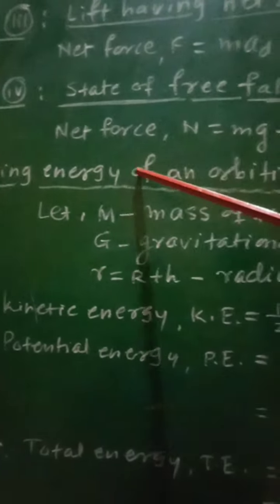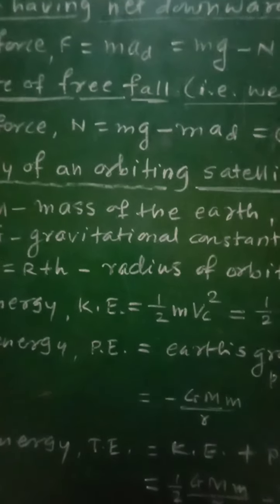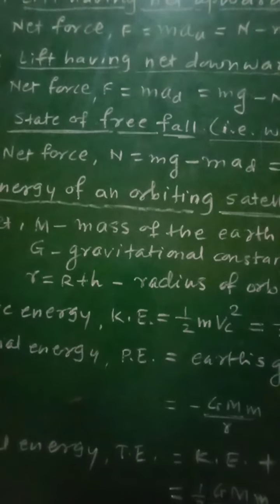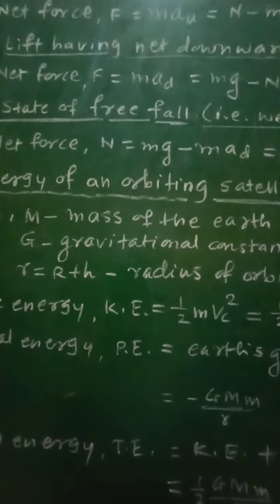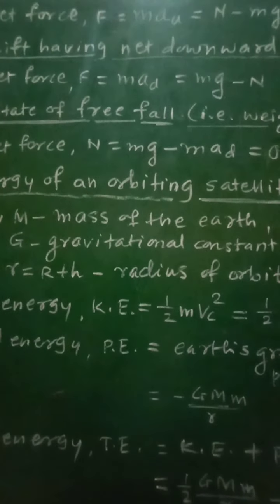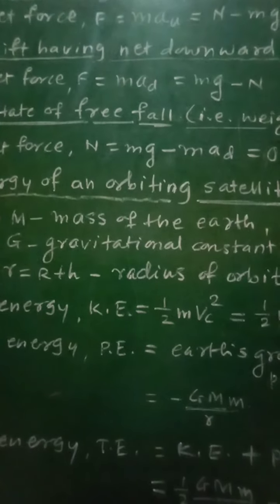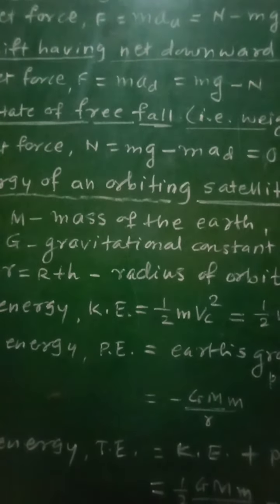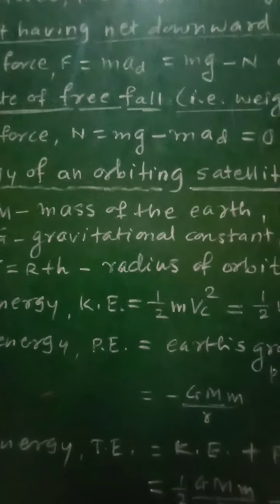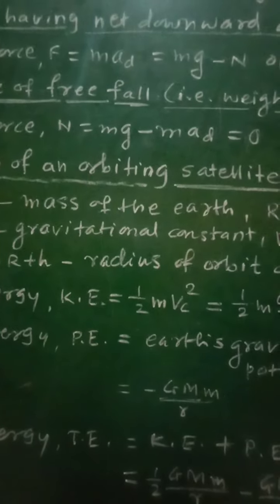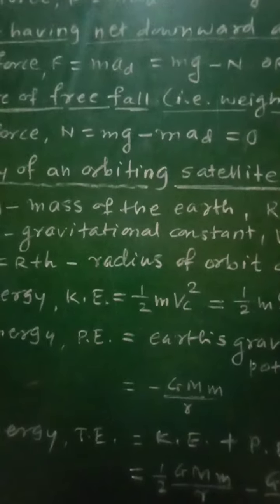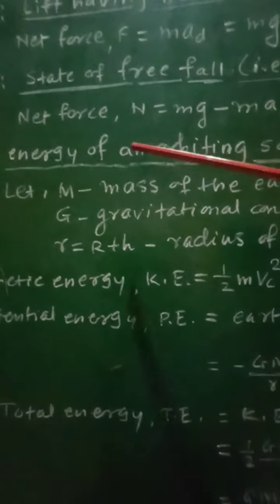Now let us see the next point: binding energy of an orbiting satellite. The minimum energy required by a satellite to escape from Earth's gravitational field is called the binding energy of that satellite. In order to obtain the expression for binding energy, let us consider some terms.